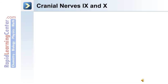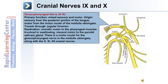The glossopharyngeal nerve is the ninth cranial nerve. Its primary function is mixed sensory and motor. The origin is sensory from the posterior portion of the tongue, and motor from the motor nuclei of the medulla oblongata. It travels through the jugular foramen. Its destination is somatic motor to the pharyngeal muscles involved in swallowing, and visceral motor to the parotid salivary gland. There is a motor nuclei for the glossopharyngeal nerve in the medulla oblongata, along with cranial nerves ten, eleven, and twelve.